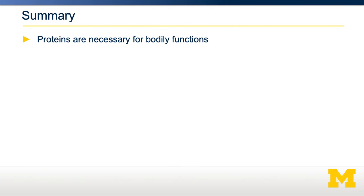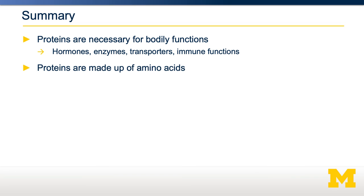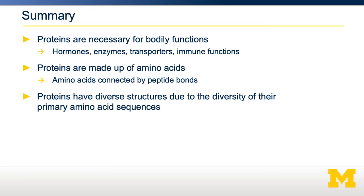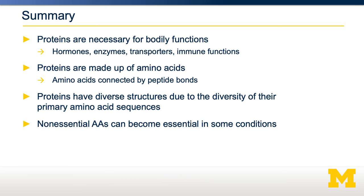In summary, proteins are essential for a whole variety of bodily functions, including hormones, enzymes, transporters, and immune functions. However, only a small number of proteins comprise most of the proteins in our body, so when there are protein deficiencies, it's those proteins that dictate the phenotypes. Proteins are made up of 20 different amino acids connected by peptide bonds, and the variety of those amino acids dictates the structure and folding of the protein. Proteins have very diverse structures, which strongly affects their digestibility — recall the example between casein and whey. Finally, some amino acids which are generally not essential can become essential in some conditions, such as PKU, or due to high growth demand — for example, arginine is dispensable in adults but essential in newborns.